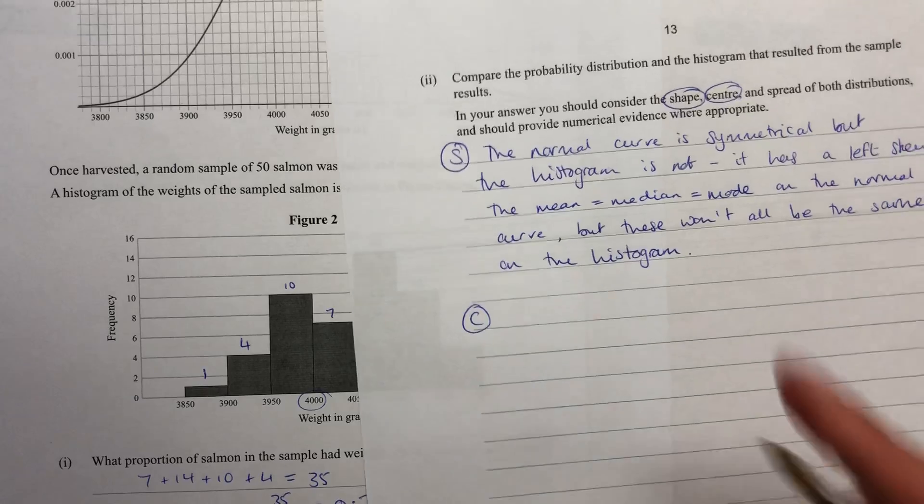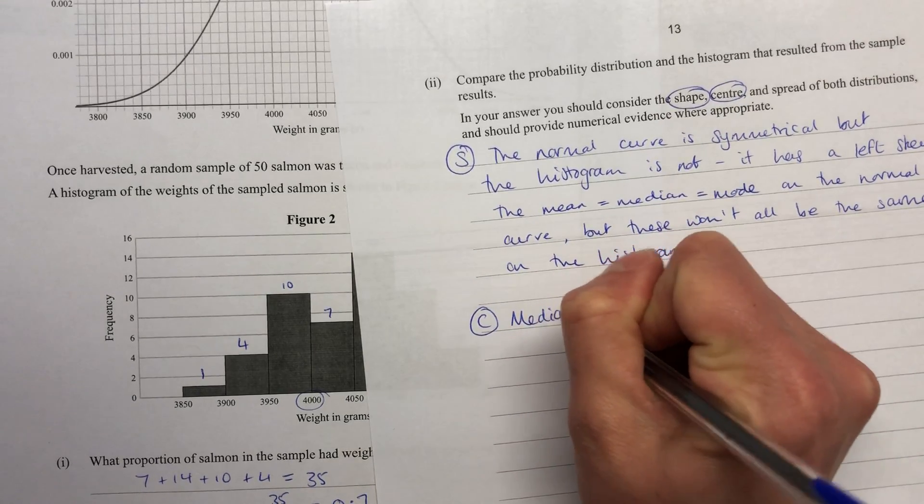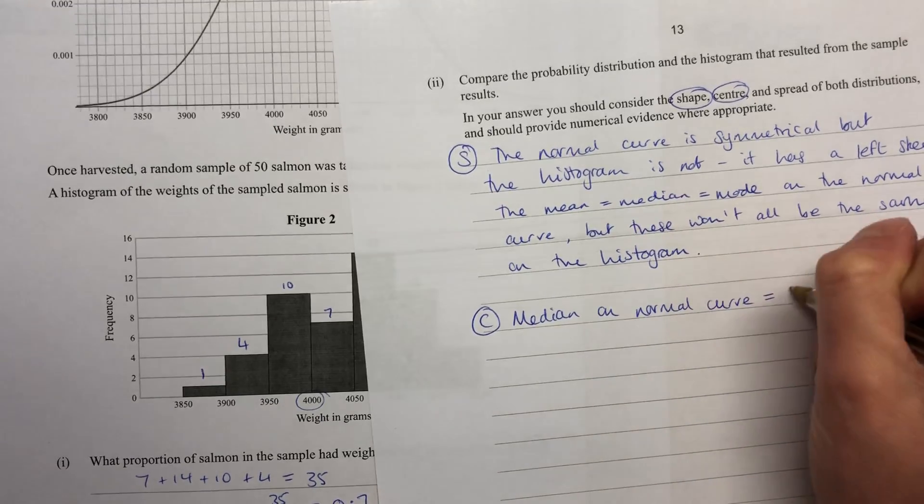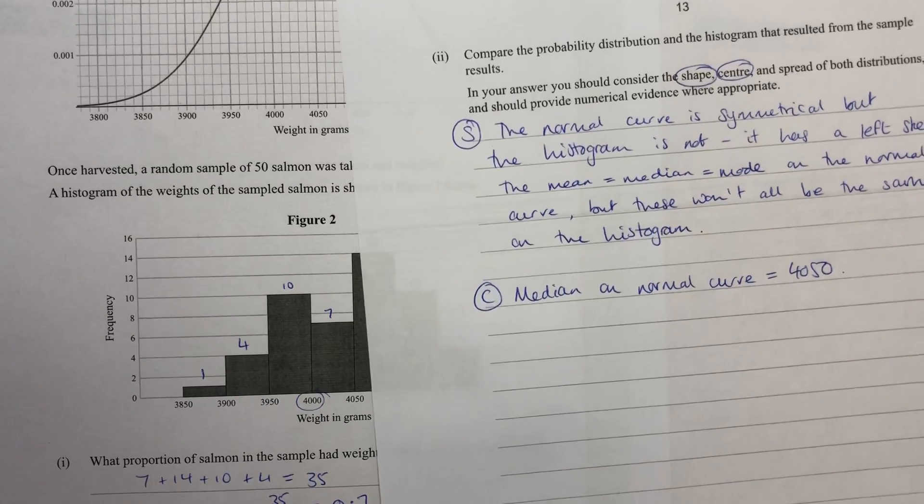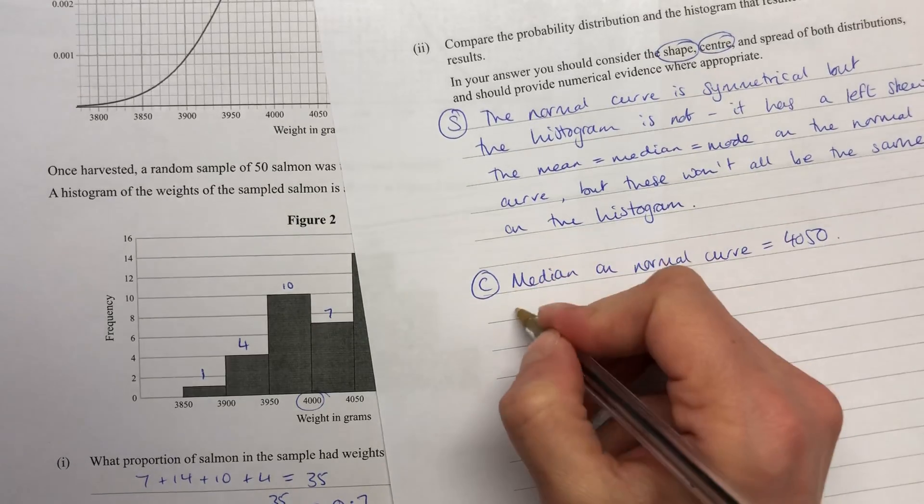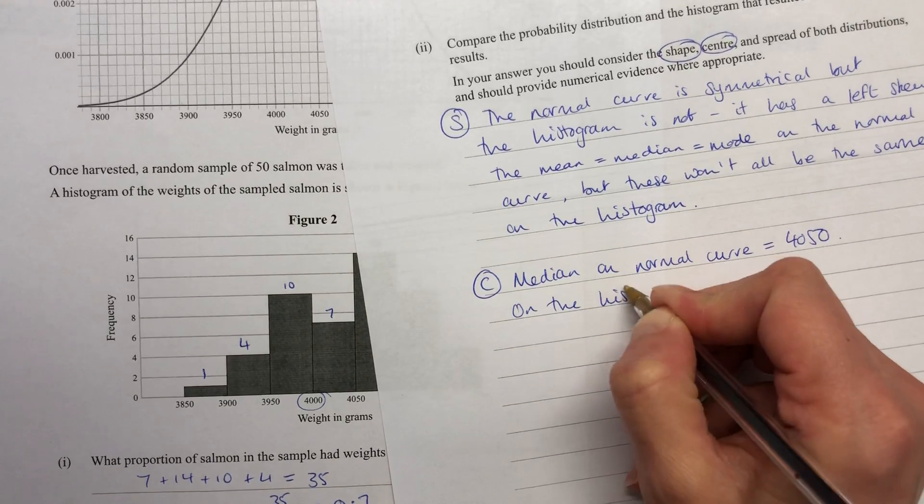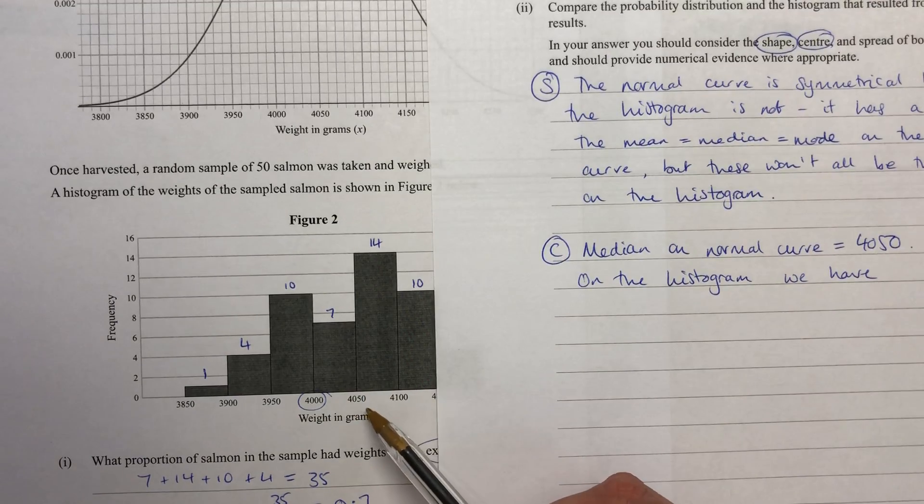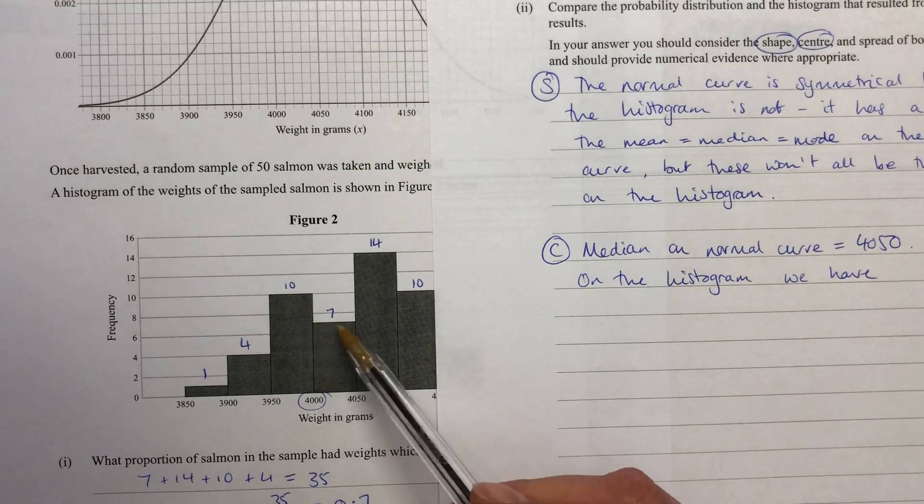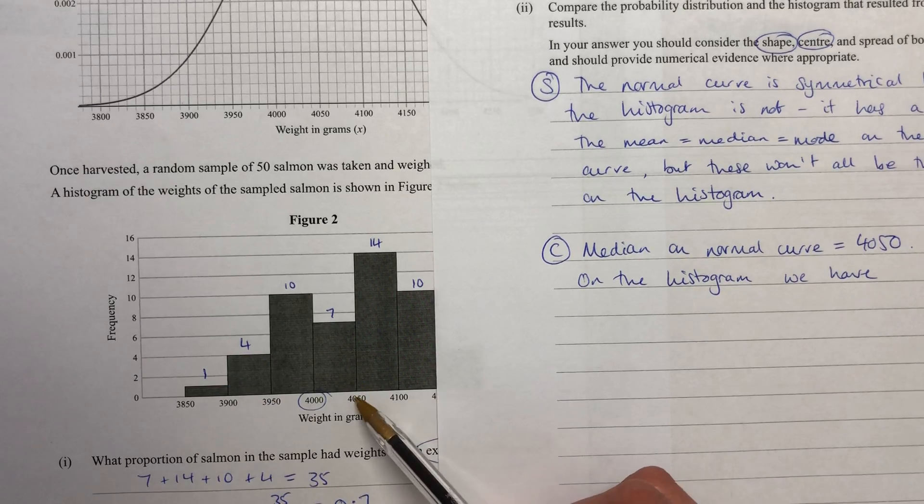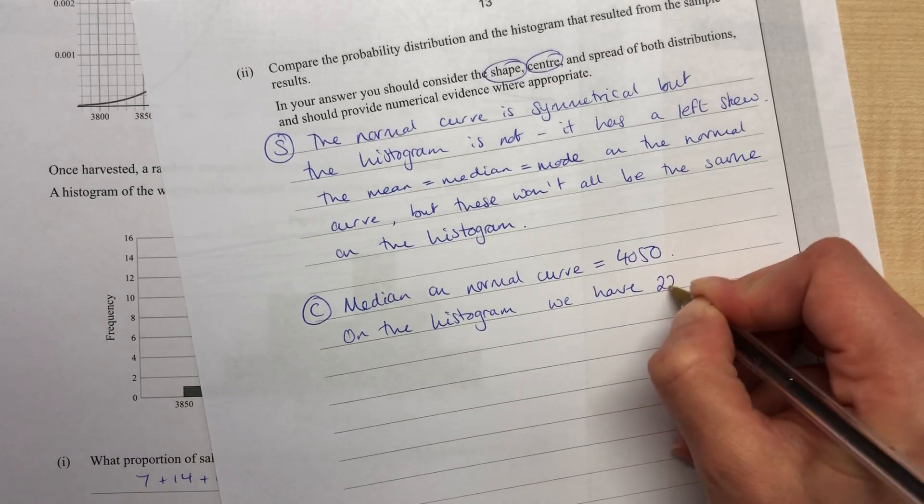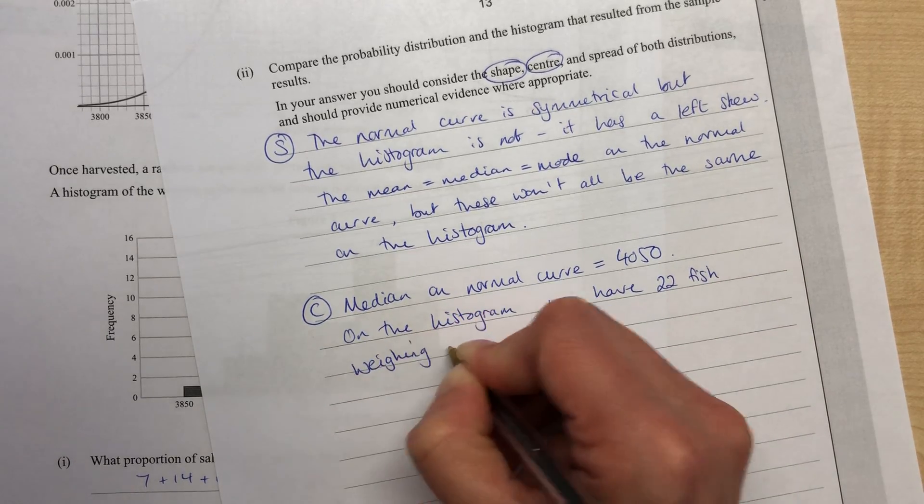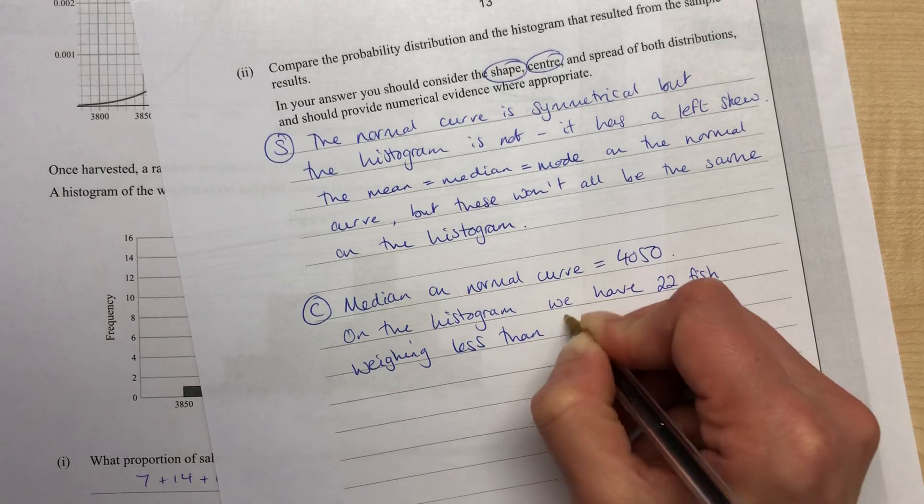So next I'm going to move on to looking at centre. So centre, I'm going to look at the median. So the median on the normal curve equals 4050. On the histogram, we have, now if we look at that 4050, we've got 10 plus 7 plus 4 plus 1 below the 4050. So that's 22 fish weighing less than 4050.